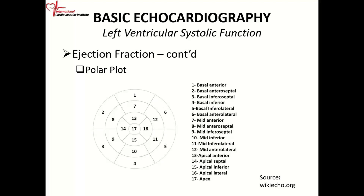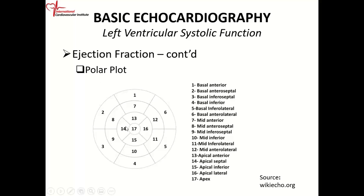We have something called the polar plot, which looks confusing but is actually very simple. We take our short axis segments: the apex is plugged in at the center, then the mid-segment ring around it, and the basal segment forms the outer ring. This way, we have the whole heart on display in one image. In computer-driven reports, each of these different segments is shown on the polar plot.